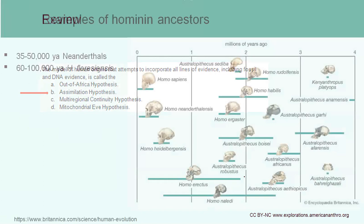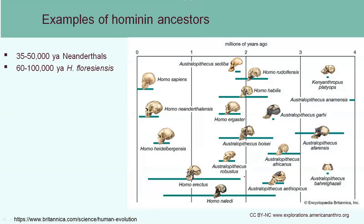Going back to the image of all the different hominin ancestors — we have those australopithecines overlapping with early Homo members — and now we're going to look at more recent members including the Neanderthals, who only went extinct about 35,000 years ago and actually lived at the same time as modern Homo sapiens in the same areas of Europe. We're also going to look at Homo floresiensis, who have some unusual traits only recently discovered.